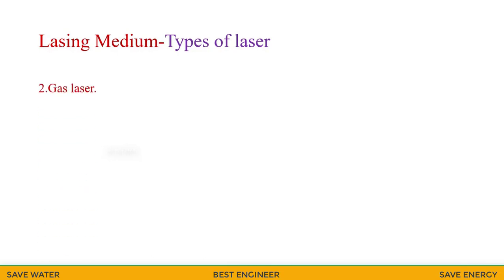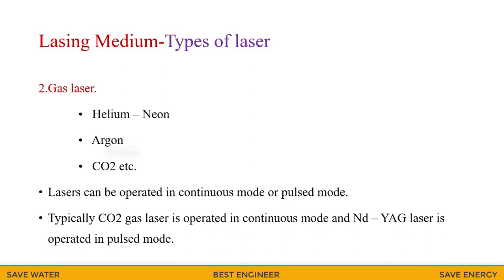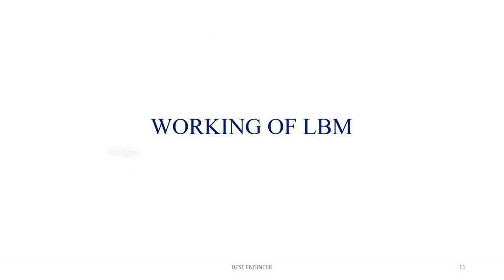The second type is gas laser, helium neon laser, argon laser, carbon dioxide laser. Lasers can be operated in continuous mode or pulsation mode. Generally, the carbon dioxide lasers are operated in continuous mode. And neodymium YAG laser is used in pulse mode.